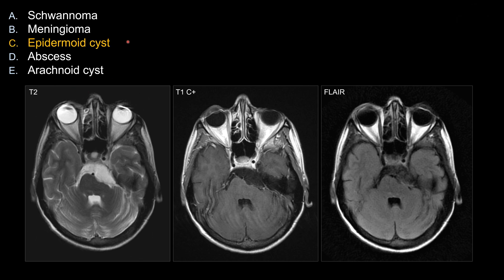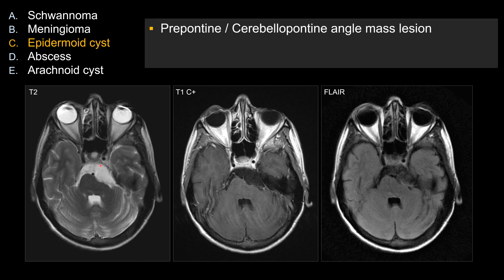The correct diagnosis is epidermal cysts. Let's look at some imaging features that make epidermal cysts the best choice among the five possibilities. You can see expansion of the prepontine cistern as well as the CPA cerebellopontine angle cistern, with mass effect against the brainstem as seen here. On T2, it's extremely bright, just like CSF. On T1 post-contrast, it does not enhance, just like CSF.